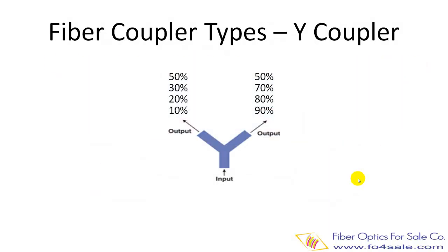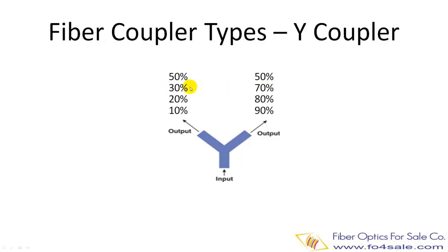Now let's talk about fiber coupler types. The first type is called Y-coupler, also called tap coupler. This type of coupler simply divides the signal into two outputs. The power distribution ratio between two outputs can be precisely controlled, such as 10/90%, 20/80%, 30/70%, 40/60%, or 50/50%.